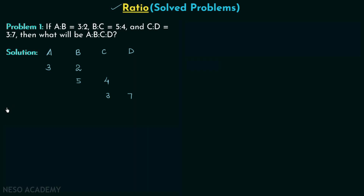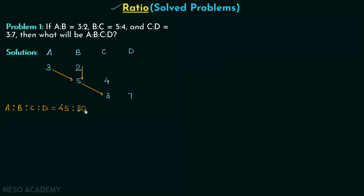Now we can find a:b:c:d easily. The first term is 3 × 5 × 3 = 45. The second term is 2 × 5 × 3 = 30. The third term is 2 × 4 × 3 = 24.